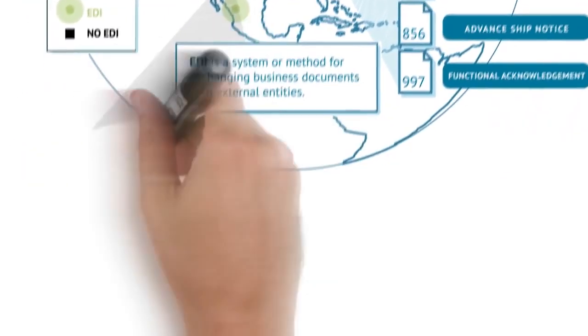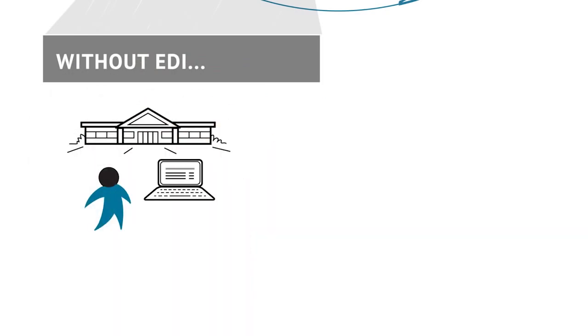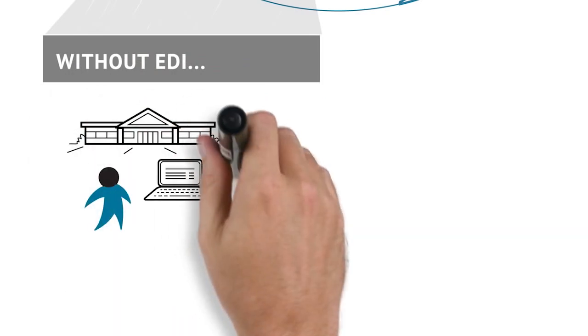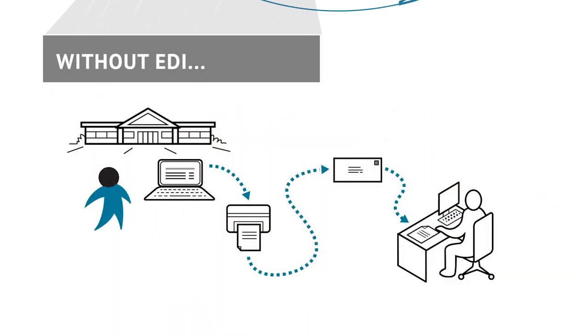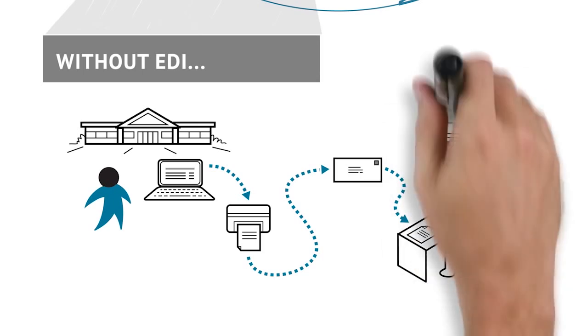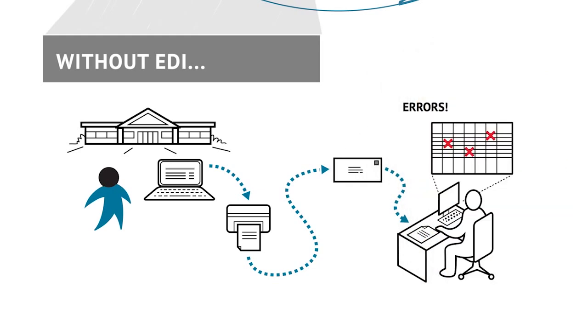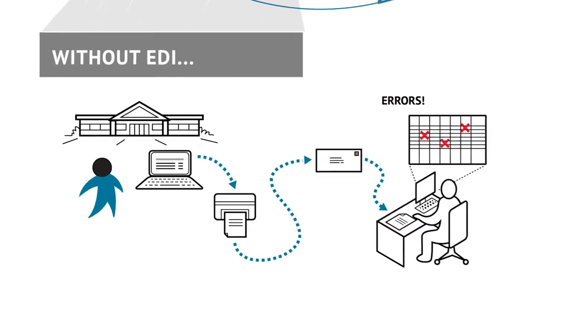Consider how a transaction, such as a purchase order, is processed without EDI. The purchase order may start out as electronic data, but then be printed to paper and manually re-typed into your business system. This process is inefficient — it wastes valuable time and creates opportunities for error with every step. EDI increases speed and accuracy.